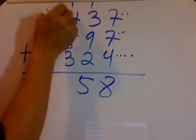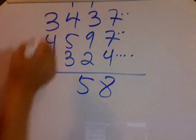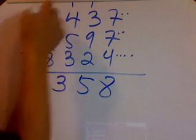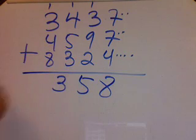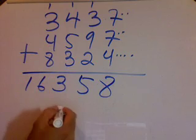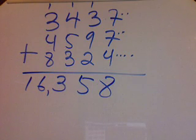Then you've got 1 and 4 which is 5, and 5 is 10, and that's 13. Then 1 and 3 is 4, plus 4 is 8, and 8 gives 16. The answer is 16,358.